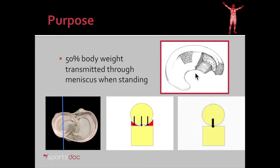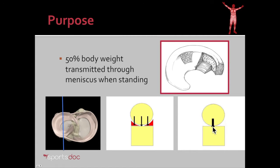You can also see what would happen if we didn't have the meniscus. The femur without the meniscus comes into contact with the relatively flat surface of the tibia at really only one point, therefore increasing the contact load, increasing the weight on the cartilage, and therefore the cartilage wear and arthritis.